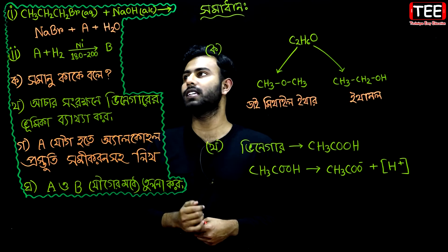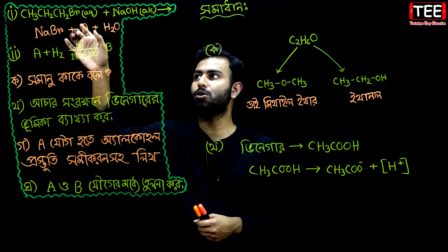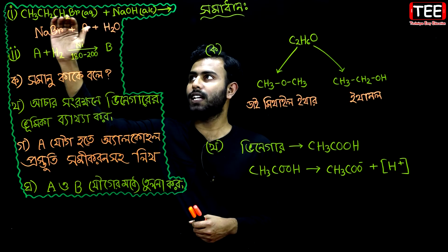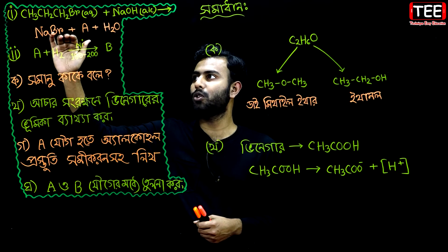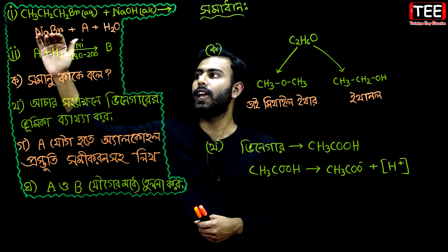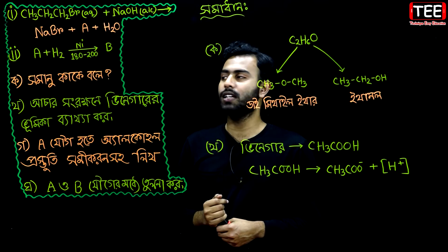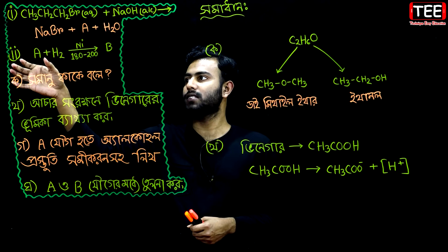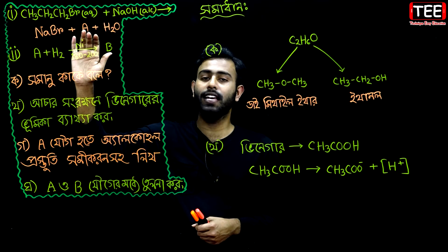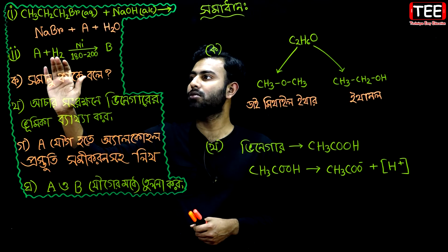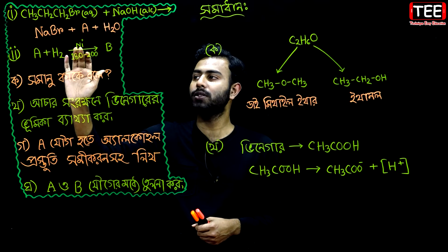So what can we get with sodium bromide and water? In the first line, we need sodium bromide plus A plus H2O. We need to use sodium bromide plus A plus H2O as the products.